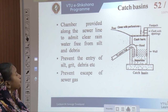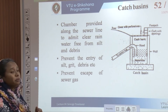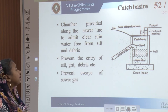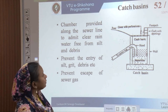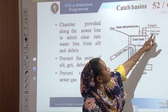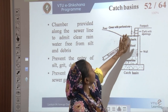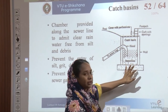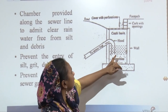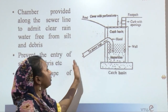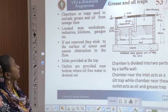Catch basins are chambers provided along sewer lines to admit clear rain water free from silt and debris. They prevent the entry of silt, grit, and debris, and also prevent the escape of sewer gas. The curb has openings through which rain water enters; covered with perforations, the concrete storage space collects water where impurities settle at the lower level, and a hooded sewer line connects from where the water exits.